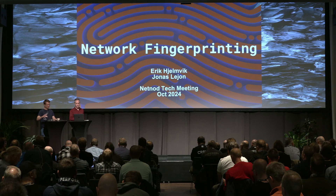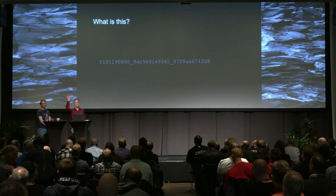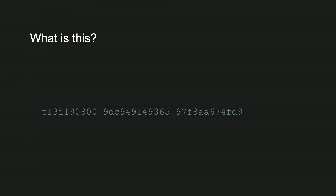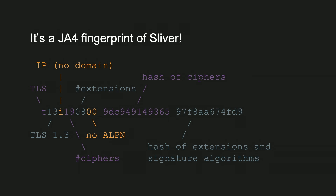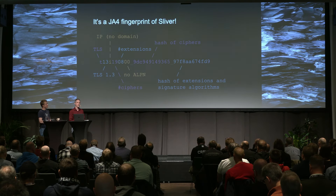Does anyone know what this is? It's some type of fingerprint. This is actually a JA4 fingerprint of Sliver, the command and control framework. What JA4 fingerprints do is fingerprint the TLS handshake of the client specifically. This particular fingerprint is a fingerprint of one single handshake. It's not technically a fingerprint of Sliver — it's a fingerprint of the TLS implementation that Sliver is using.